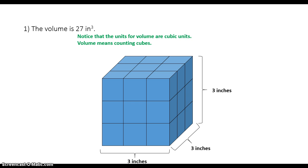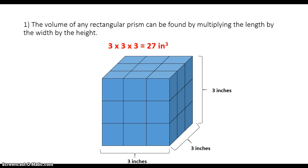Notice that the units for volume are cubic units. Volume means that we're counting cubes, so your units are always going to be cubic inches, or inches to the third power. The volume of any rectangular prism can be found by multiplying the length by the width — which is really just the area of the base — and then multiplying that by the height.